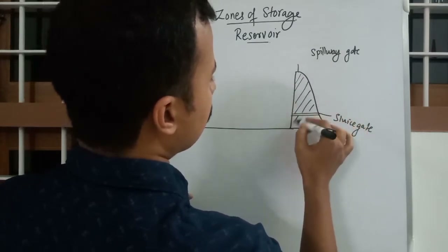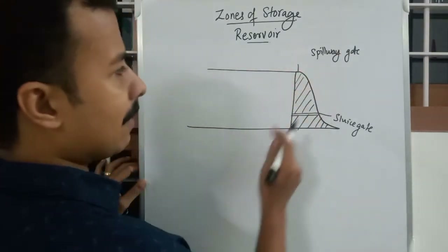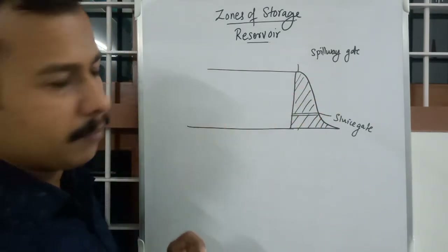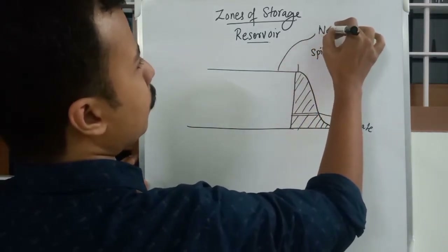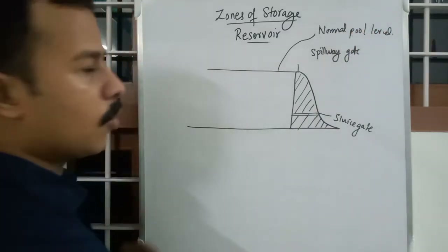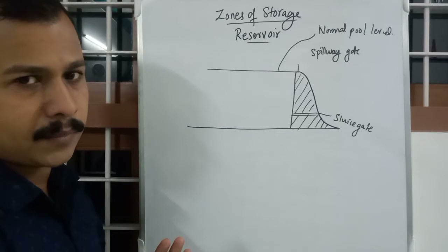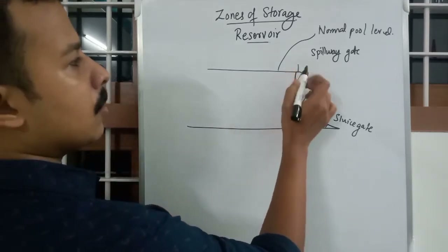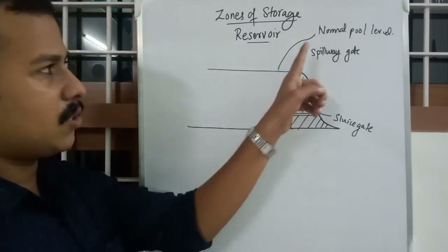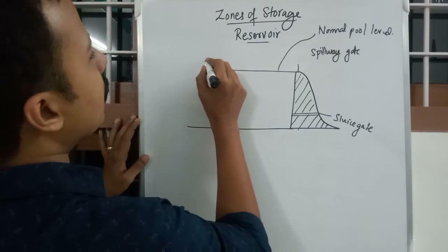If this is the reservoir and the dam, the water level kept at the top surface of the dam is called the Normal Pool Level. Normal Pool Level is the normal level of water in the reservoir — the line or level pertaining to the topmost end of the dam constructed.